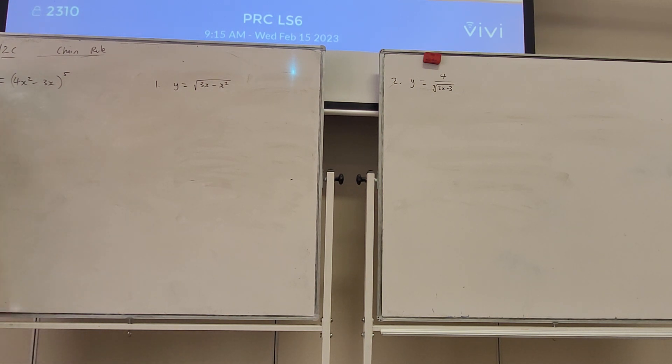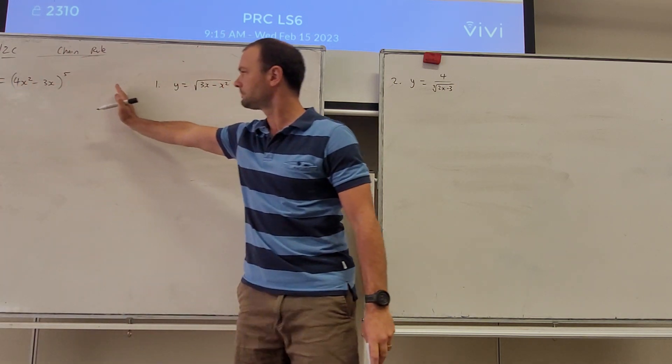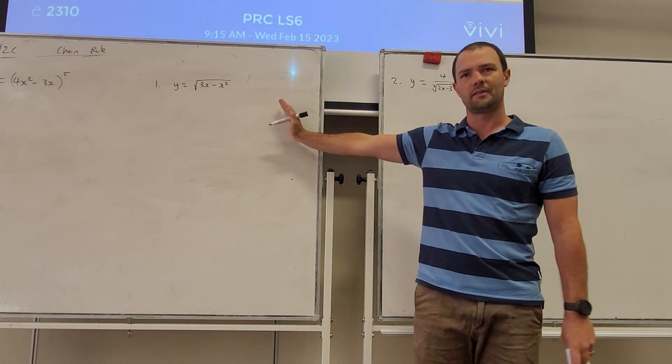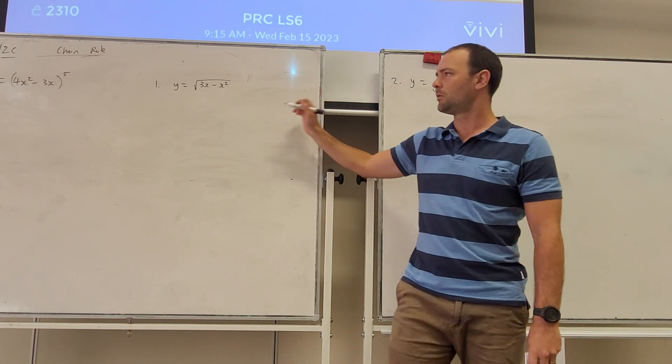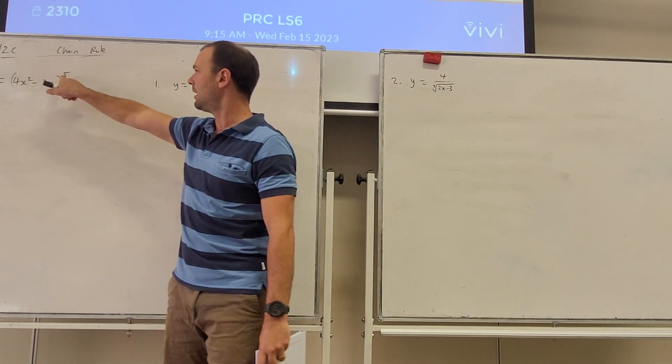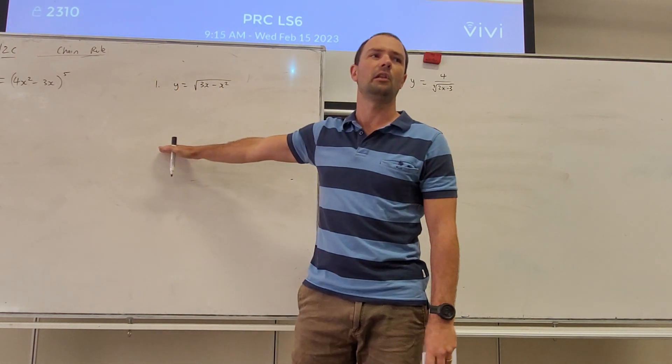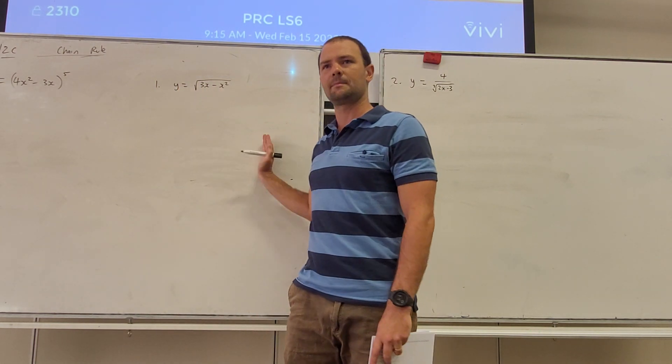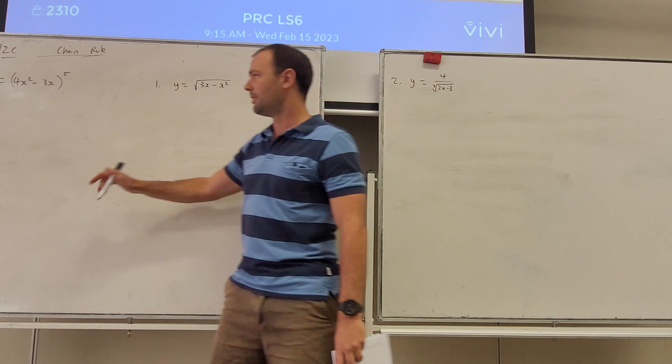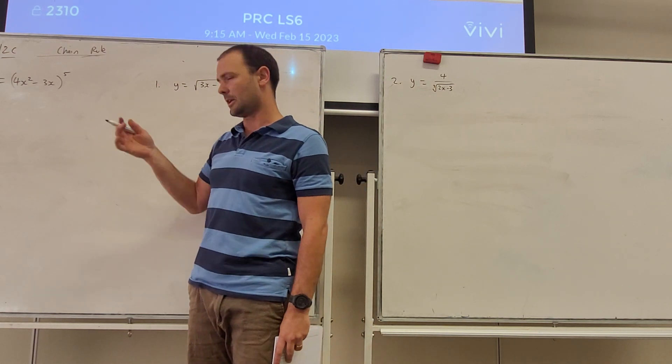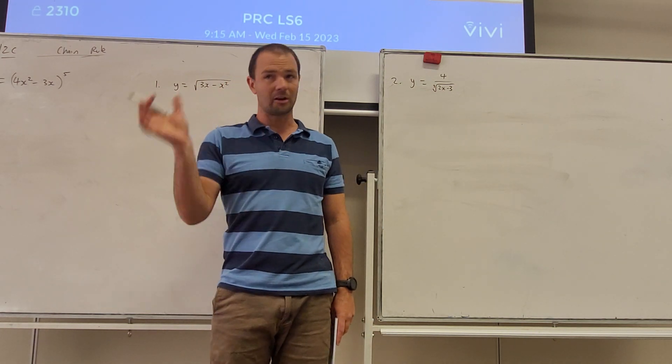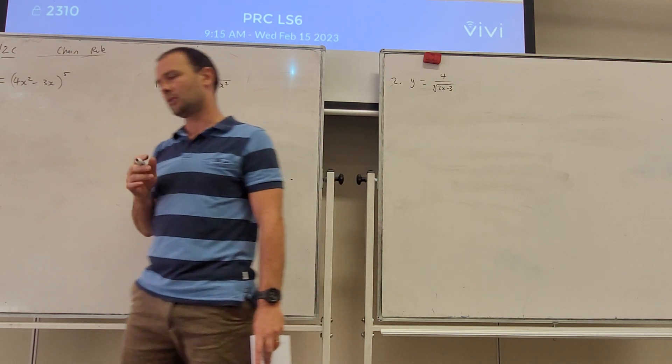So we've got this function here and we want to differentiate. One thing we could do is fully expand it, using some really long FOIL. We could use Pascal's triangle, we've got the power of 5. That's going to be so long, it's going to take a long time to do, and you've seen my expansion, I'll probably make a mistake. Once it's expanded, then we can differentiate. There's actually a quicker way, and we're going to do it using composite functions.